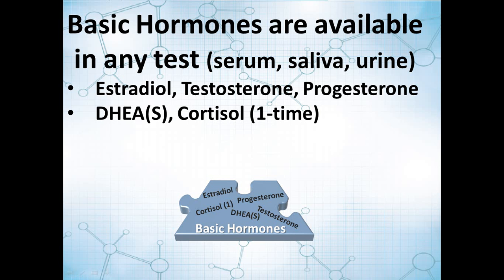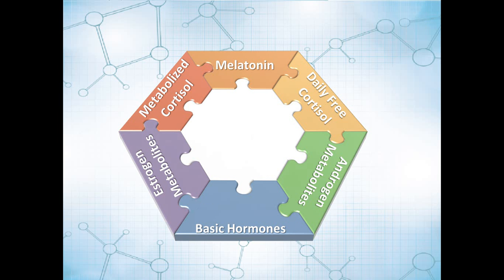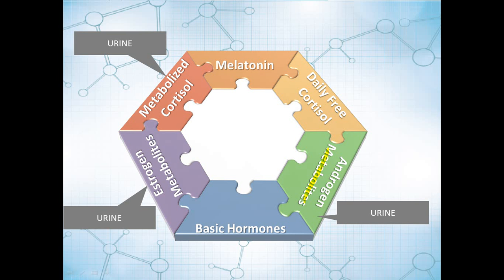When you want a more comprehensive overview, we want to add not just estradiol but also estrogen metabolites, and not just testosterone and DHEA but also androgen metabolites, so we can look at DHT production and more complete hormone pictures. We also want to look at the daily free cortisol pattern, which is an important piece of HPA axis function, as well as metabolized cortisol. Some of these tests are available in urine, while the daily free cortisol was only available in saliva, and the most comprehensive overall is urine testing.